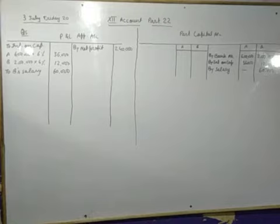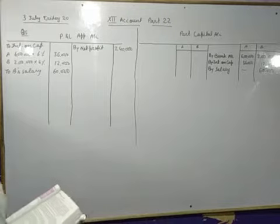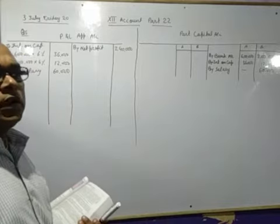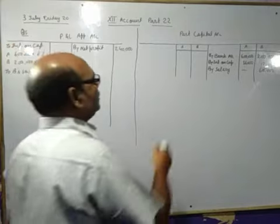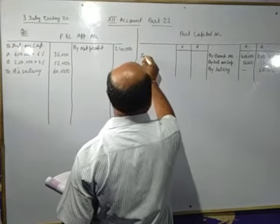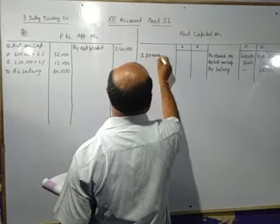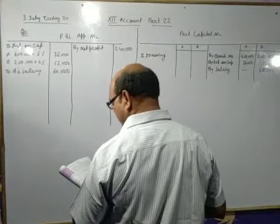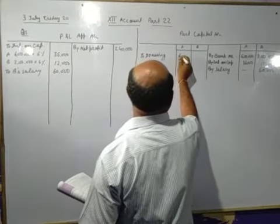The drawings of partners A and B were 60,000 and 40,000. For the drawing, you have learned the entry: partner's capital account debit to drawing. Capital account debit side for drawing — that amount will be 60,000 and 40,000.